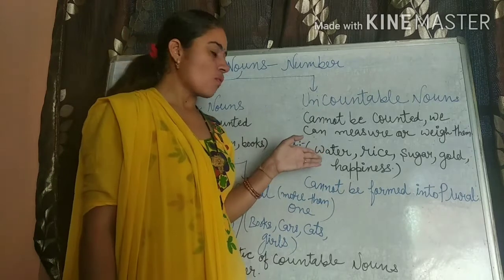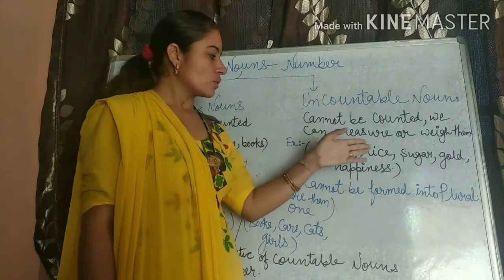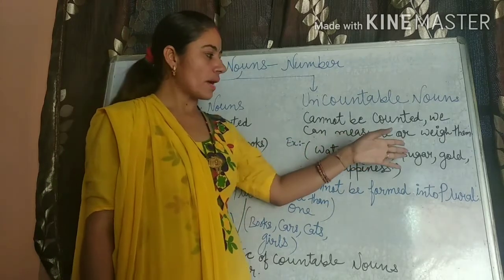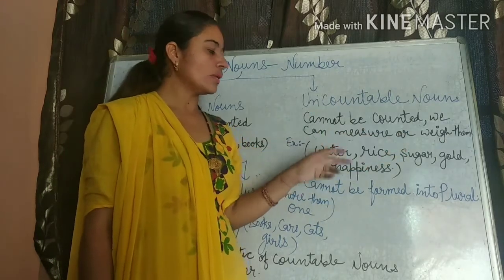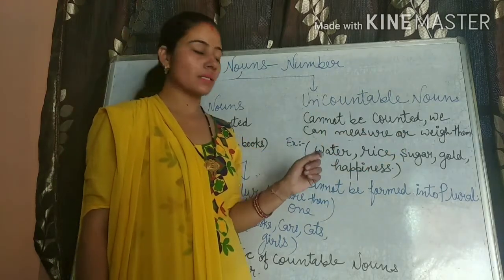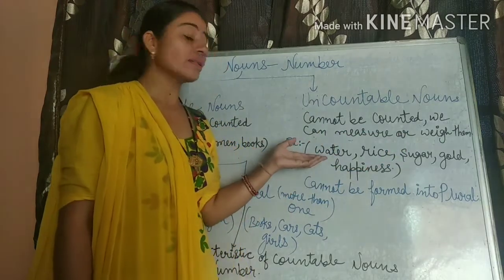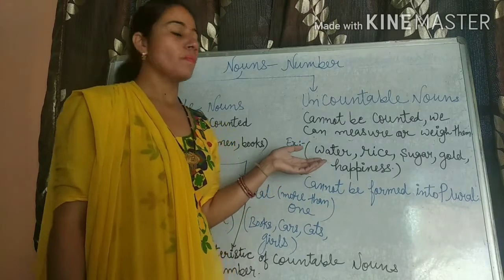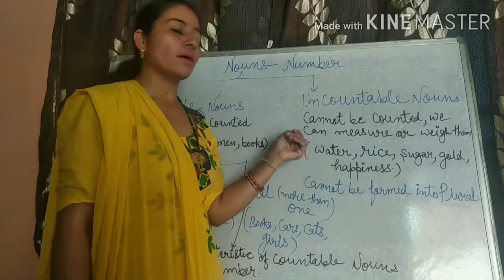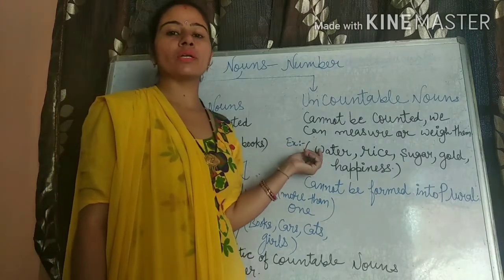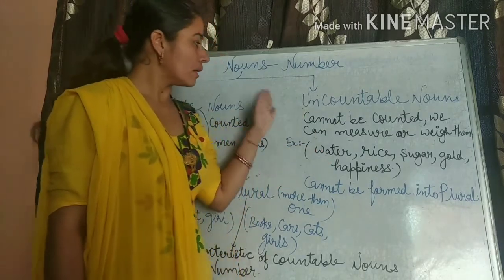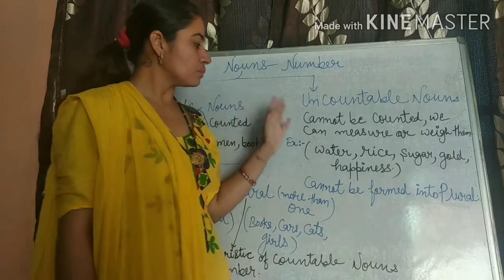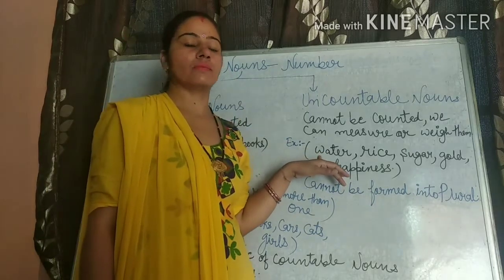That is: water, sugar, rice, gold, happiness, etc. We can't say 'waters.' Hum nahi keh sakte 'waters.' Hum sirf kahenge 'water.' It can only be said as water.